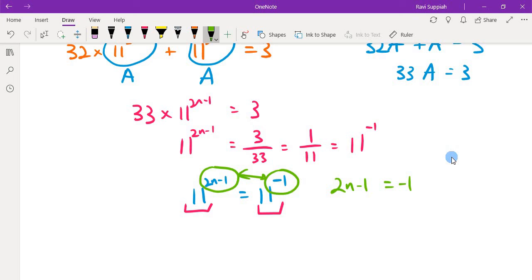So 2n minus 1 equals minus 1, which means 2n equals 0, and therefore n equals 0. The final answer is n equals 0.